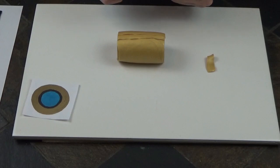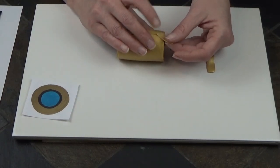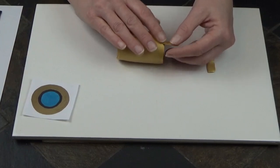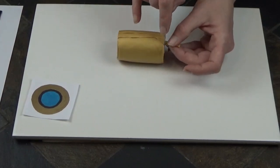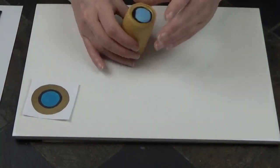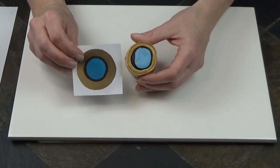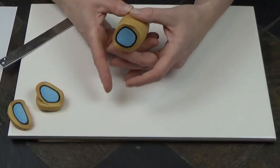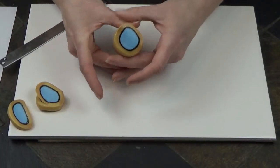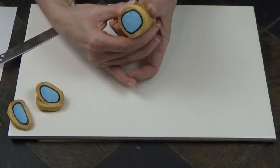At this point it doesn't matter that there's broken pieces because you're going to be reducing anyway and all of that will be gone. I'm pretty happy with that. If I had more 18 karat gold I probably would have added a little bit more but I'm going to start reducing what I have now.